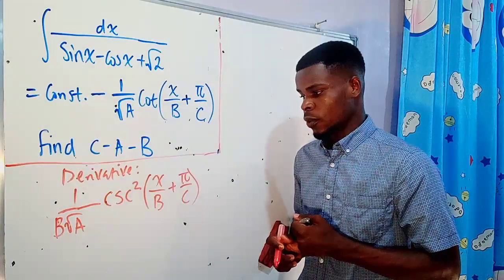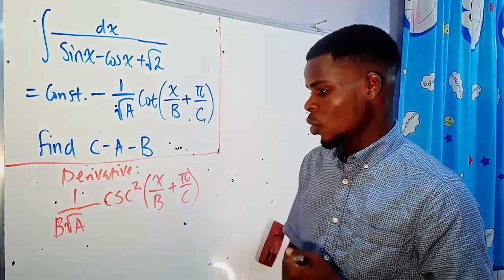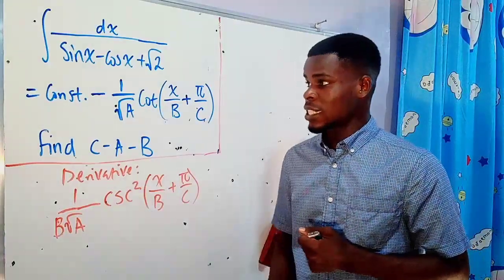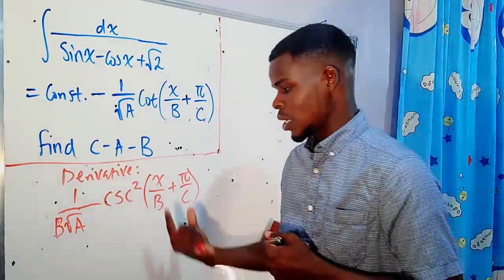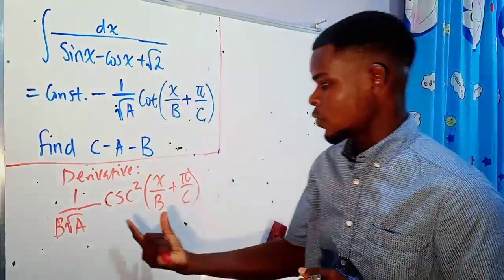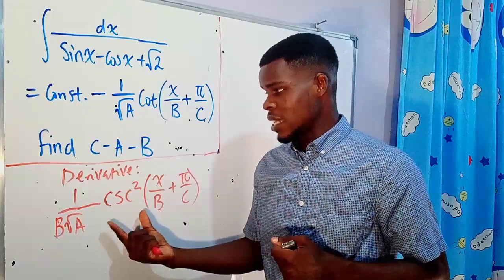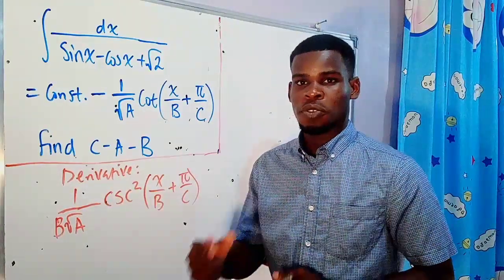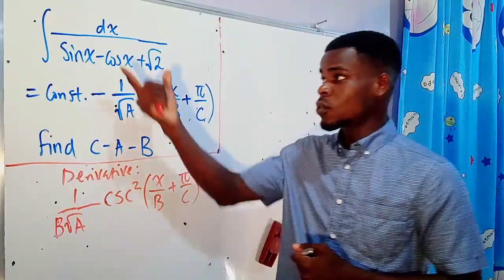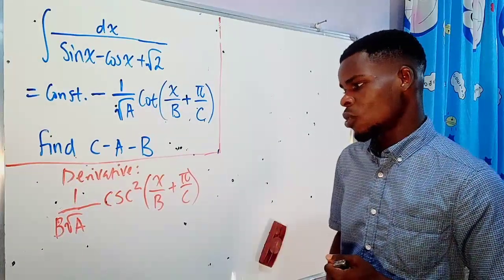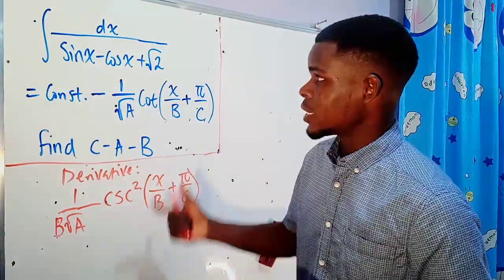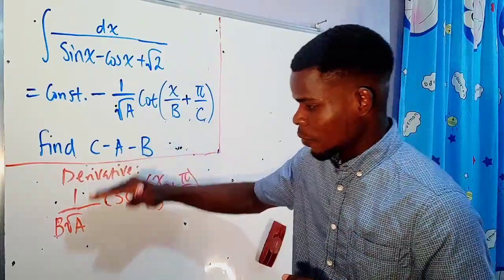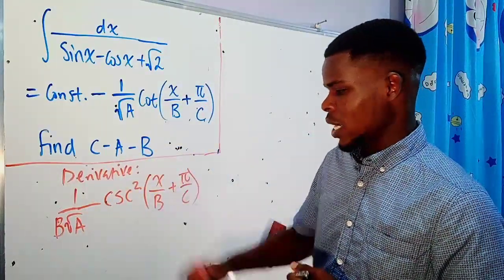So the derivative is 1 over b times the square root of a, times cosecant squared of x over b plus pi over c. Now, cosecant squared is 1 over sine squared of the same angle. The derivative form and the original integrand look very different, but applying trigonometric identities could connect them — it might be quite tricky. I'll leave that approach as an exercise and instead integrate the function directly.